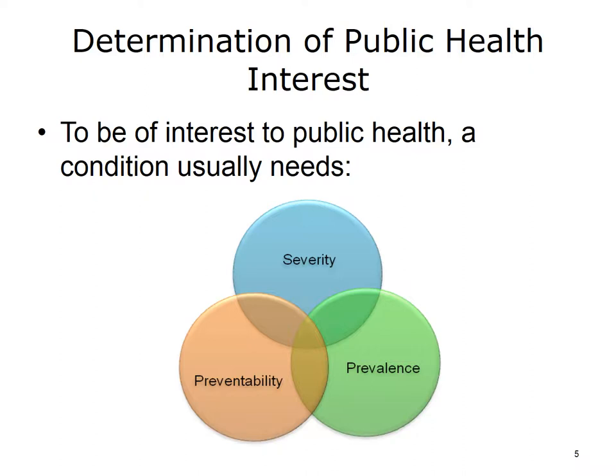In order for a condition to realistically be of interest to public health, it will usually have to fit the following criteria. The condition must be severe enough in its effects to warrant the investment to mount some kind of intervention. The condition must be preventable by means of a health intervention, or at least able to be mitigated in a meaningful way. And finally, the condition must affect enough of the population — which is called prevalence — to make it worthwhile for public health to intervene.